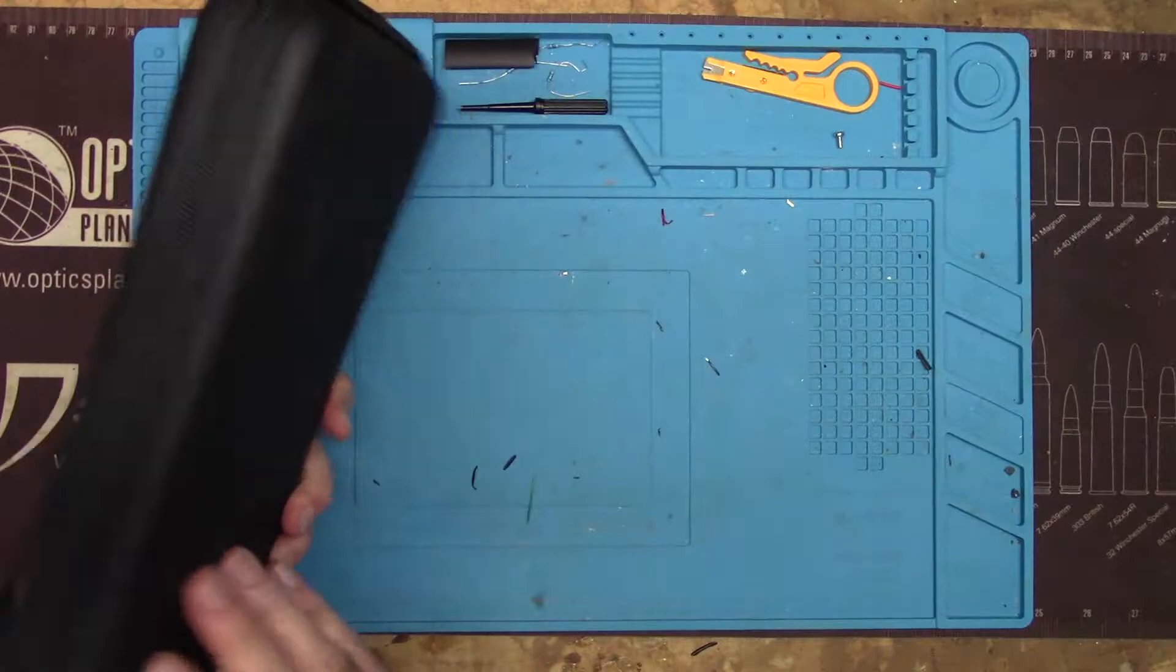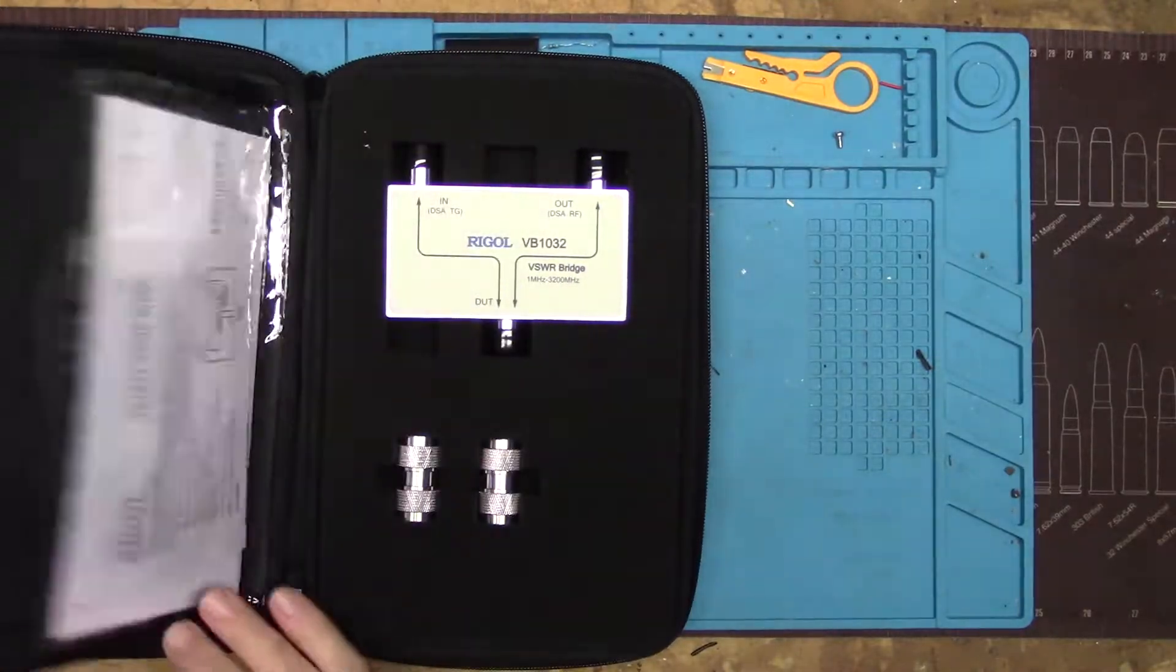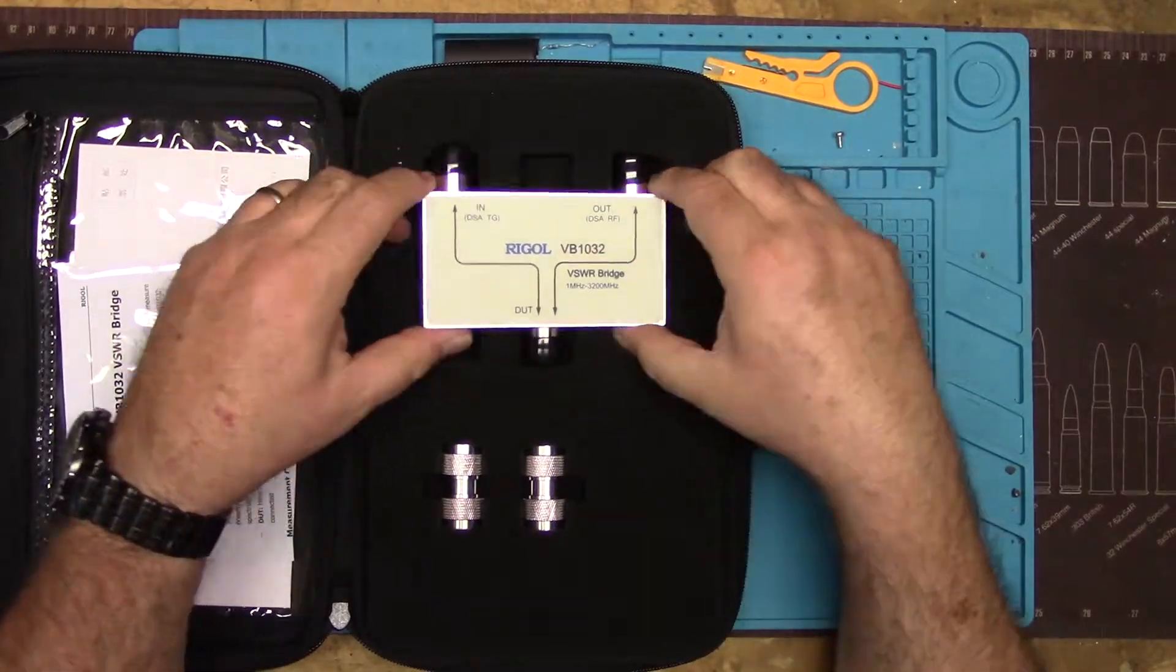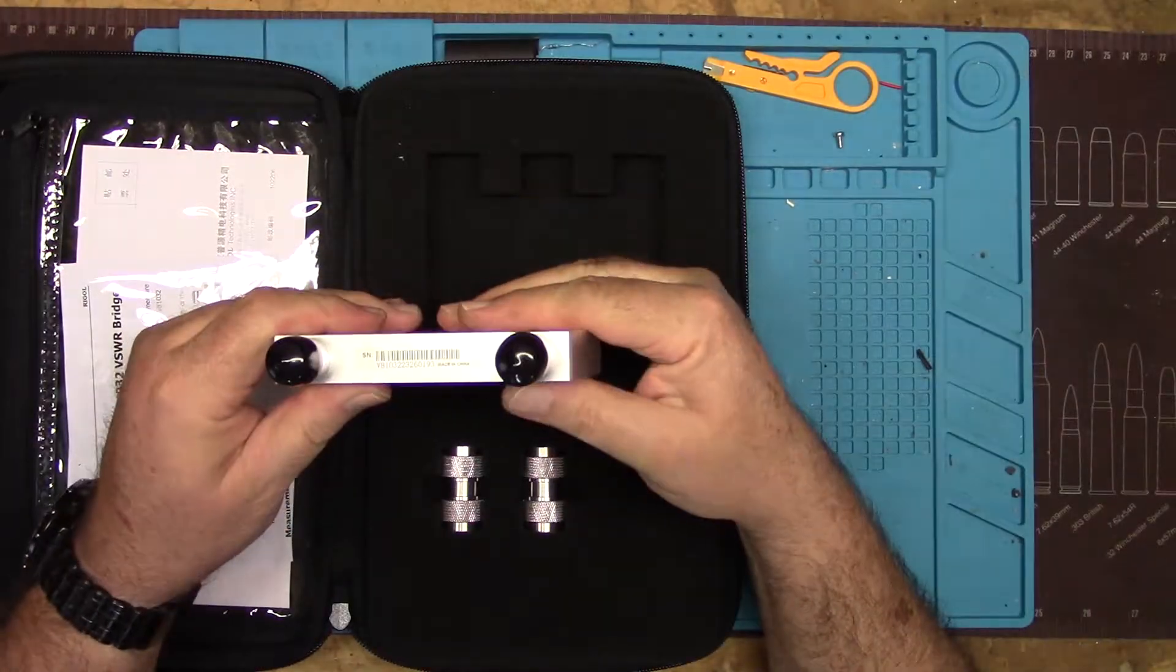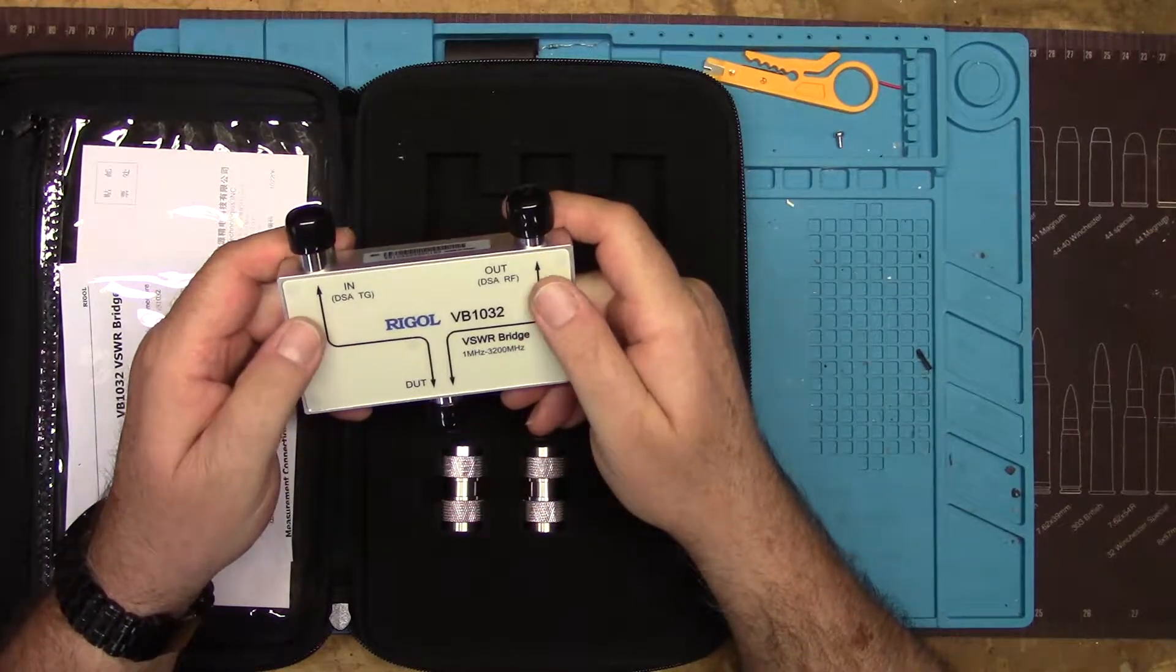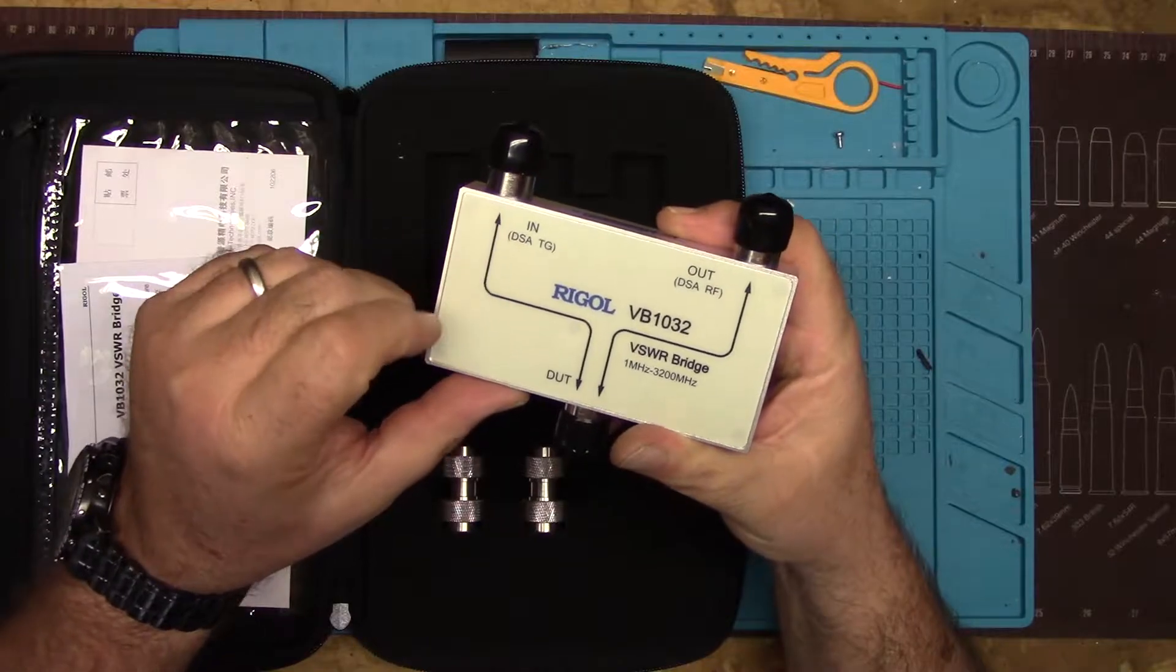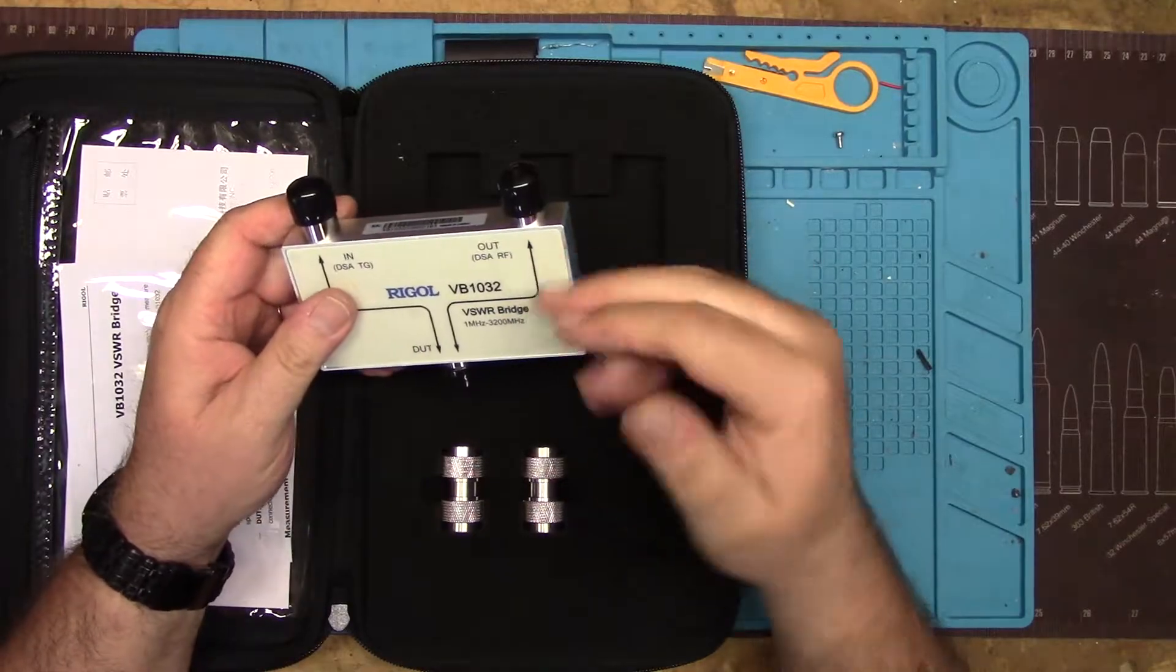The package came from Regal. It was in a box, it's got this super nice case. Inside we find some documentation and the actual VB1032 device. This device is very well made, very solid aluminum. I can just barely see some screw holes underneath the sticker but I'm not going to remove it because we're going to keep this new and shiny.